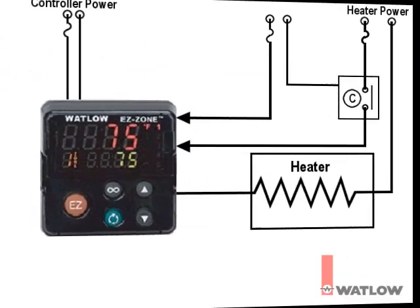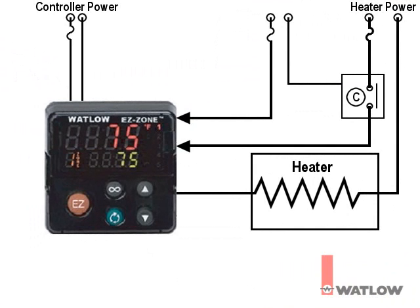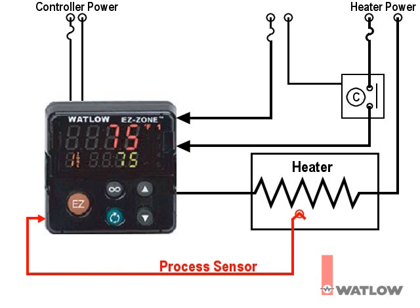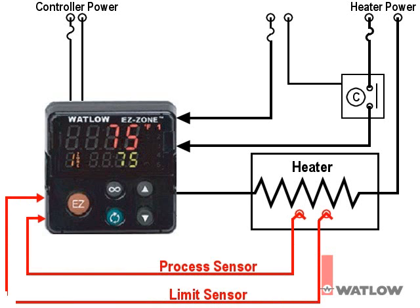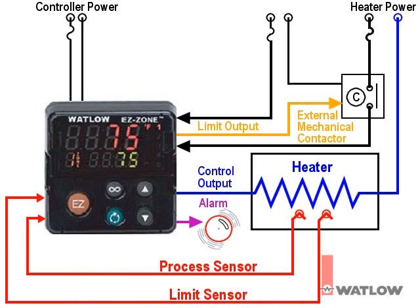The PM controller includes a control loop and an integrated limit. We are going to use EasyZone Configurator to set up the controller for an application that includes two Type-J thermocouples — one for temperature control and a second for the safety limit. The application will use three outputs: one to drive a heater, a second that notifies the operator when the temperature is higher than desired, and the limit output which cuts power to the heater when there is an over-temperature condition.